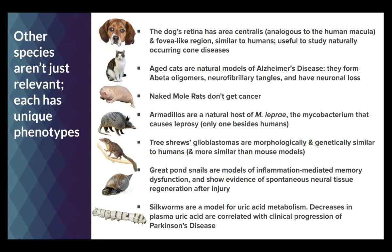The dog's retina has the area centralis, analogous to the human macula and fovea-like region, useful to study naturally occurring cone diseases. Aged cats are natural models of Alzheimer's disease, forming neurofibrillary tangles with neuronal loss. Naked mole rats don't get cancer. Armadillos are a natural host of leprosy mycobacterium. Tree shrews' glioblastomas are morphologically and genetically similar to humans. Great pond snails model inflammation-mediated memory dysfunction. Silkworms model uric acid metabolism, and decreases in plasma uric acid correlate with clinical progression of Parkinson's disease. The list goes on and on.